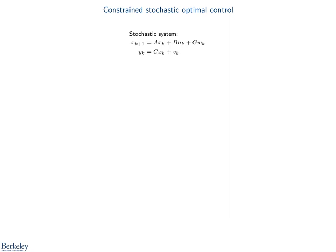Before MPC, we first look at the general constrained stochastic optimal control problem for linear systems. We have a state-space formulation with state X, control U, and measurement Y. We have a disturbance W and measurement noise V, and both are stochastic with known distributions.